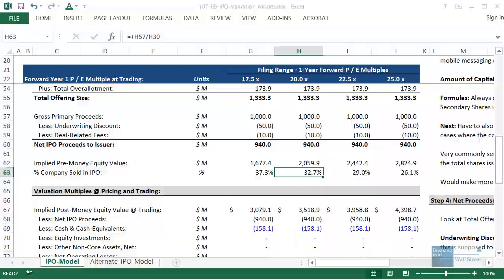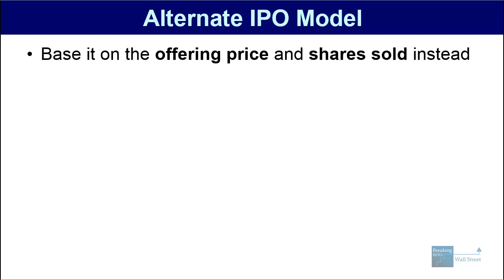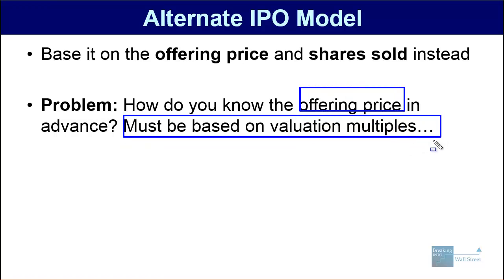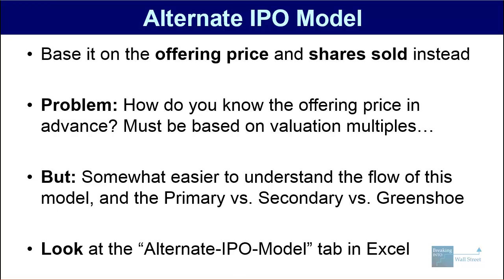That's the first version of the model. I'm going to show you briefly an alternate IPO model. In this one, it's going to be based on the offering price and the shares sold instead. The problem of course is that to figure out this offering price you need to know the valuation multiples — there's no way to guess it; it has to be tied back to the valuation in some way. So in our opinion it's a bit silly to set it up like this without some linkage to the valuation, but you will see it done this way, and it is a little bit easier to understand the flow and the primary, secondary, and green shoe distinctions. Let's go to this alternate IPO model tab in Excel.